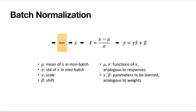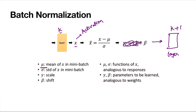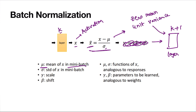If layer k produces some activation, in batch normalization we calculate the mean and standard deviation of that activation over the mini-batch, then apply standardization. This gives zero mean and unit variance, which then goes as input to layer k+1. There are also scaling and shifting operations — gamma and beta — which we will come to. For now, assume we are just doing mean and variance normalization.